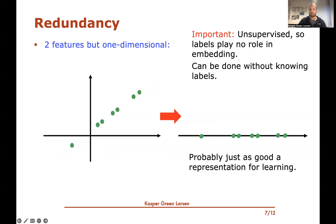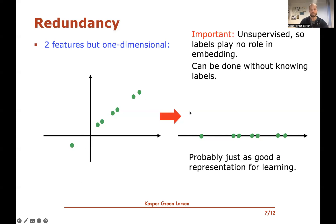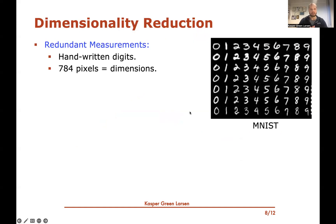Importantly, in unsupervised learning, labels play no role in the embedding — we can just ignore them. We're only looking at the features to determine the embedding, so typically we just think of training examples as having no labels. You can find this linear dependency by only looking at the feature vectors.